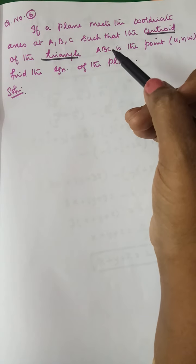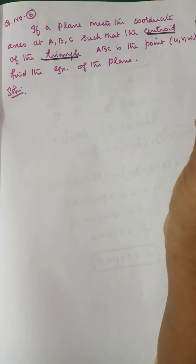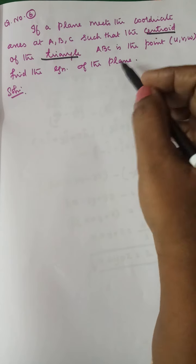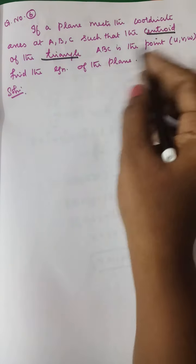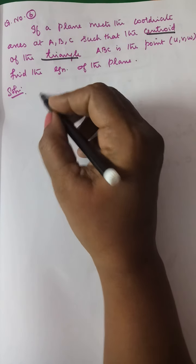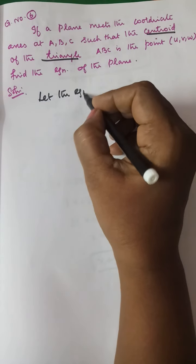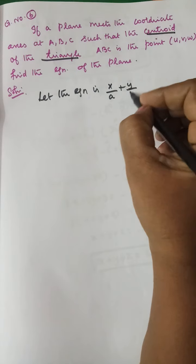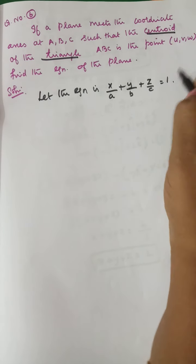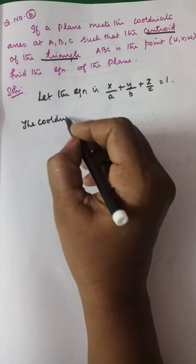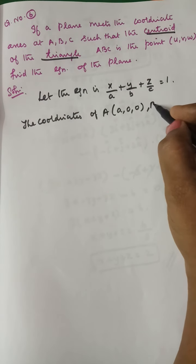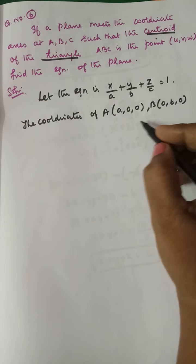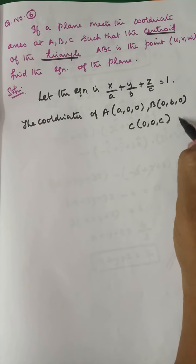We need to find the centroid of the triangle formed by the plane on the coordinate axes. The centroid formula is ((x1+x2+x3)/3, (y1+y2+y3)/3, (z1+z2+z3)/3). The coordinates of the intercept points are A(a,0,0), B(0,b,0), and C(0,0,c).